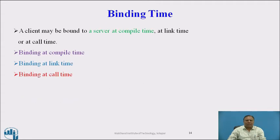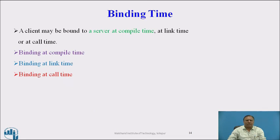Binding time: a client may be bound to a server at compile time, at link time, or at call time. Binding at compile time: client and server modules are programmed as if they were intended to be linked together. The server's network address can be compiled into the client code by the programmer. Disadvantage: it is inflexible if the server relocates, is replicated, or the interface changes. Binding at link time: the binding agent binds the client to the server by returning the server's handle, which is cached by the client to avoid contacting the binding agent again. This is suitable when the client calls the server several times once it is bound.